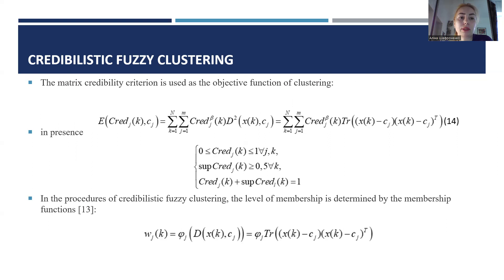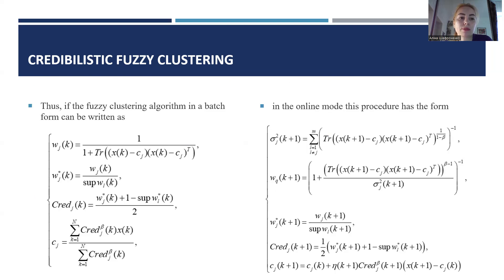The matrix credibility quotation is used as an objective function of clustering, formula 40. In the procedures of credibilistic fuzzy clustering, the level of membership is determined by the membership function. Thus, if the fuzzy clustering algorithm in a batch form can be rewritten as the first formula on this slide, and in online mode, this procedure has the form second.